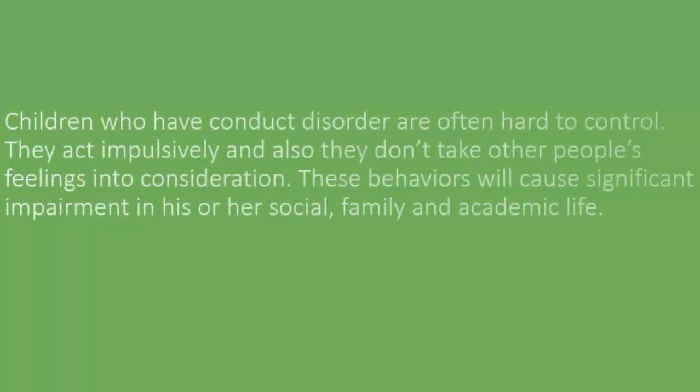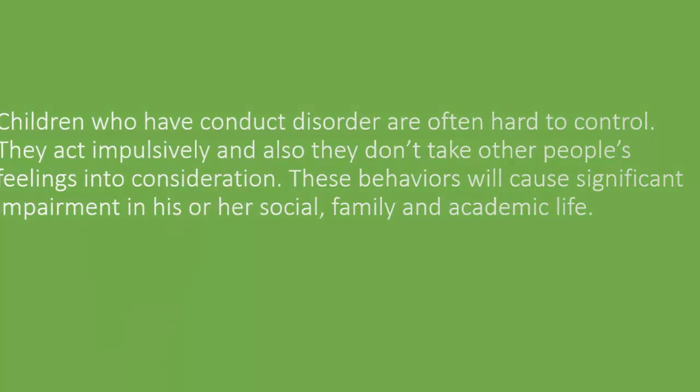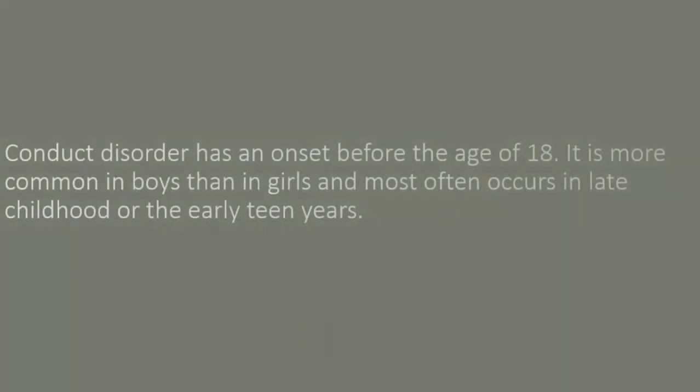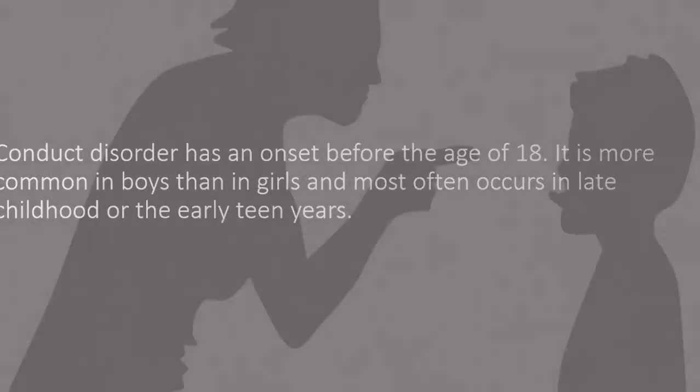Children who have conduct disorder are often hard to control. They act impulsively and also they don't take other people's feelings into consideration. These behaviors will cause significant impairment in his or her social, family and academic life. Conduct Disorder has an onset before the age of 18. It is more common in boys than in girls and most often occurs in late childhood or the early teen years.